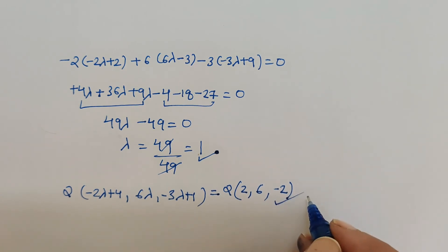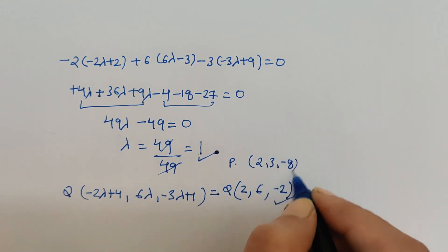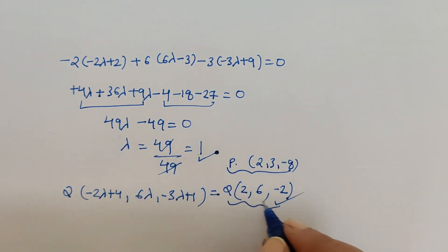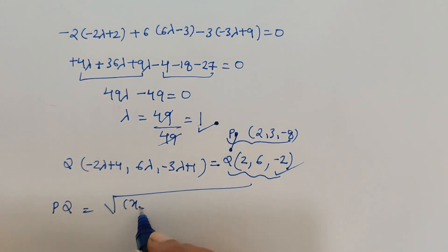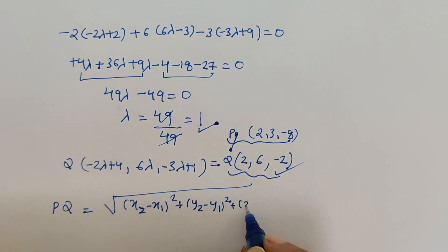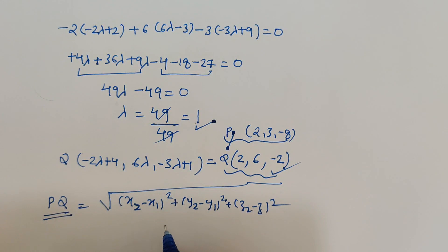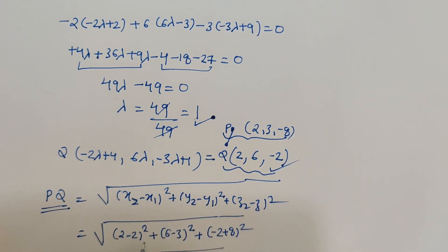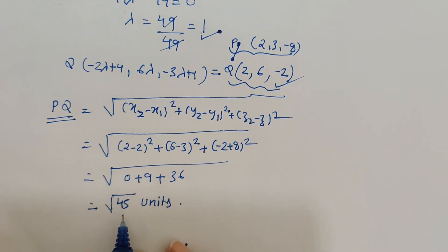Since point P is (2, 3, -8) and Q is (2, 6, -2), we can find the distance using the distance formula: √[(x₂-x₁)² + (y₂-y₁)² + (z₂-z₁)²] = √[(2-2)² + (6-3)² + (-2+8)²] = √[0 + 9 + 36] = √45 units.